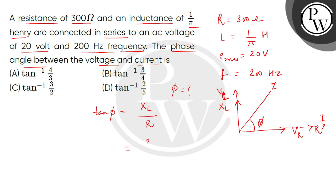Now the value of XL will be equal to 2πfL, and resistance is R. We will put the values, so 2π, f is the value of 200, and L is the value of 1 by π, and resistance is the value of 300.